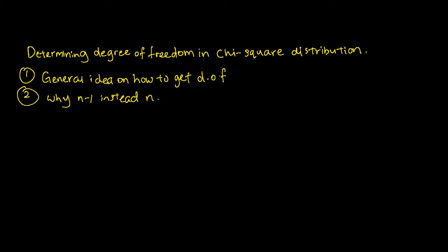Hello guys, my name is Bob, welcome to the Excel Math channel. Today I'm going to talk about determining the degree of freedom in the chi-square distribution. In this video I will give a general idea of how to get the degree of freedom for the chi-square distribution. A lot of people have been asking why we choose n minus 1, where n is the number of data points in the sample, instead of n when determining the degrees of freedom.